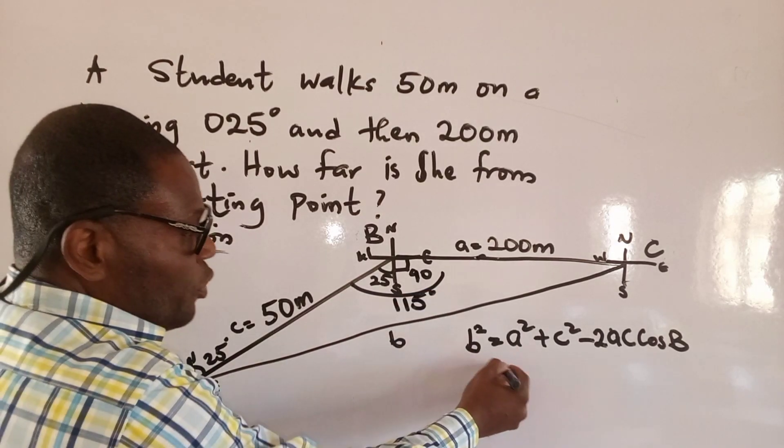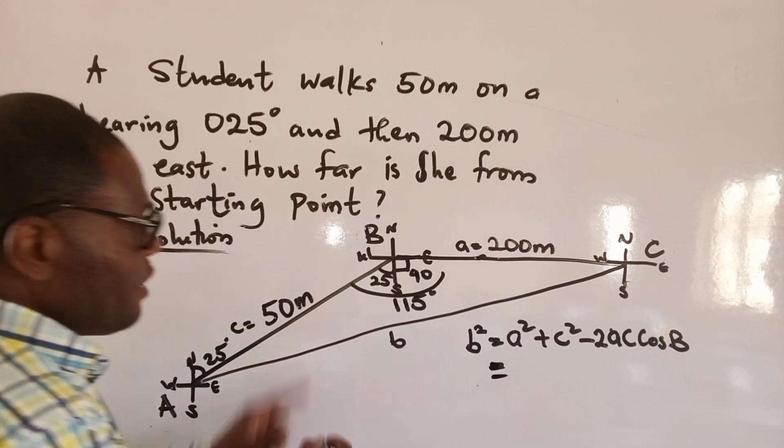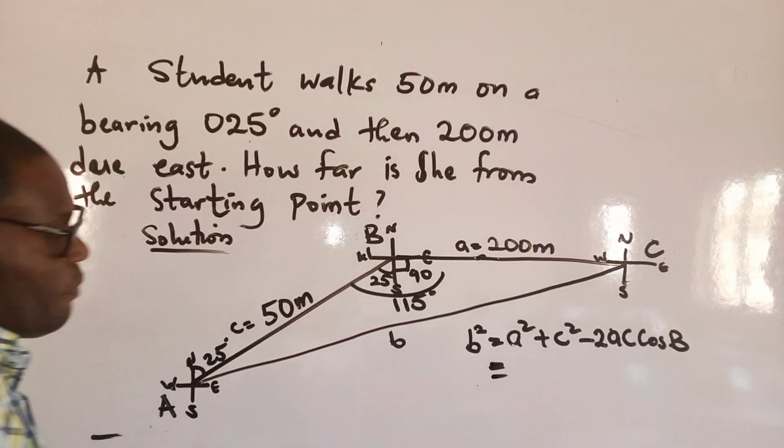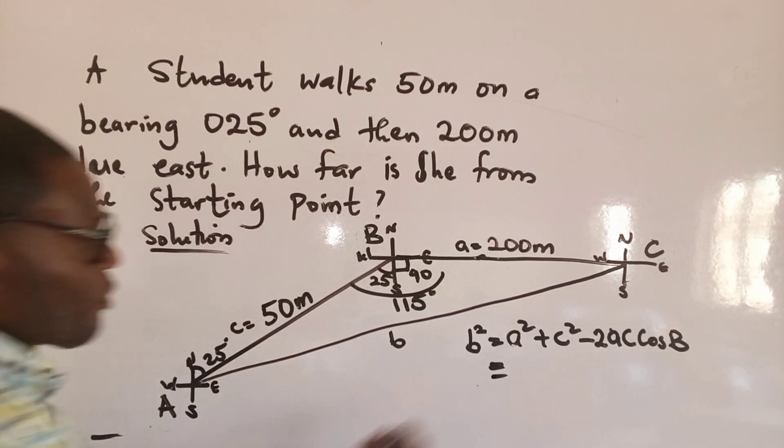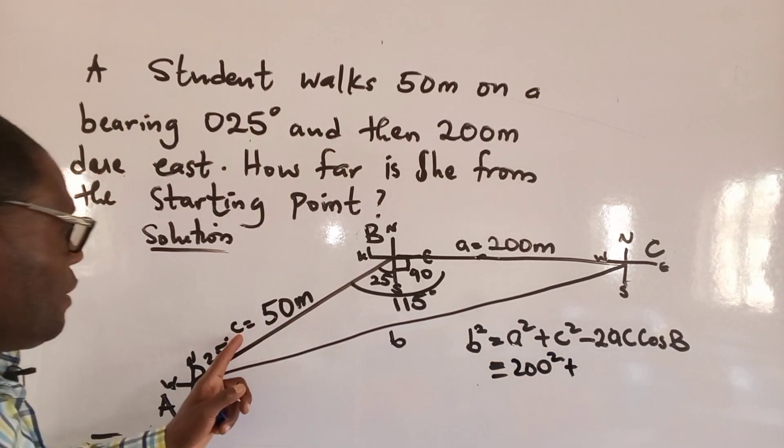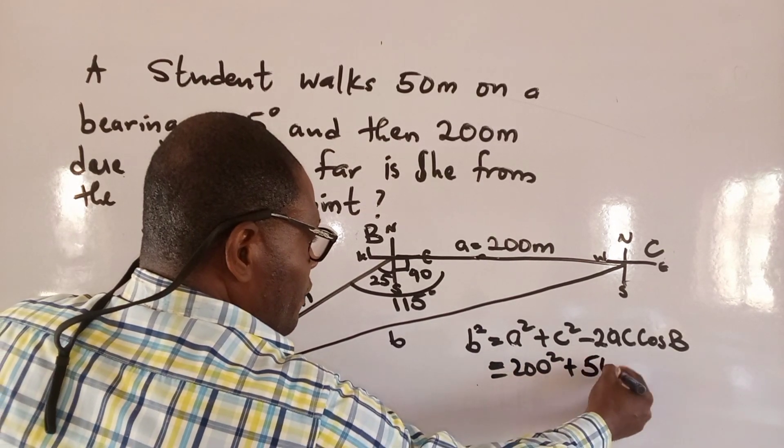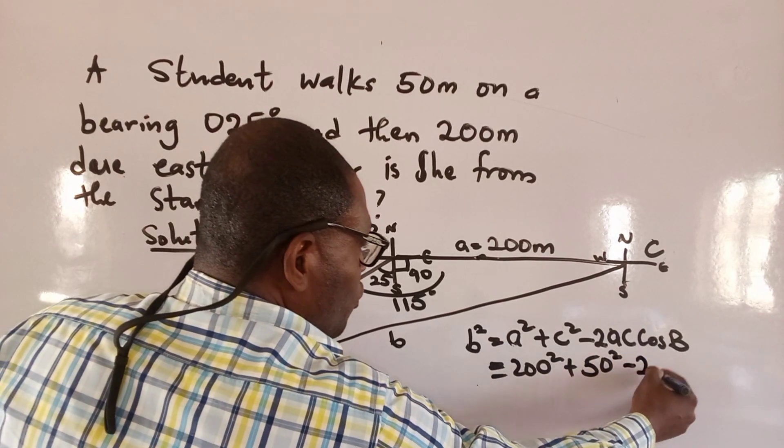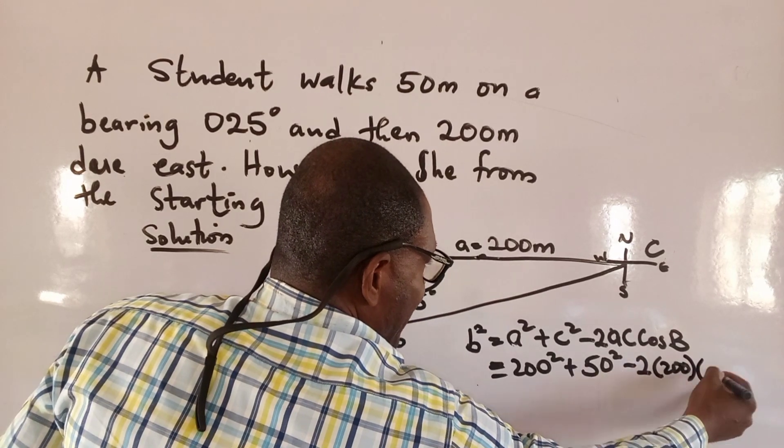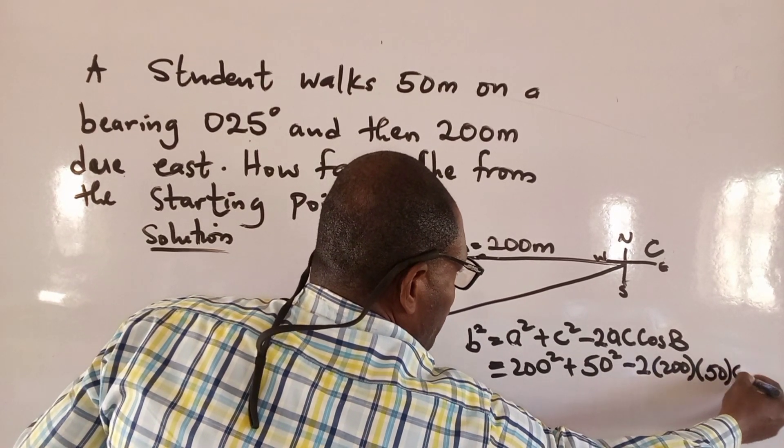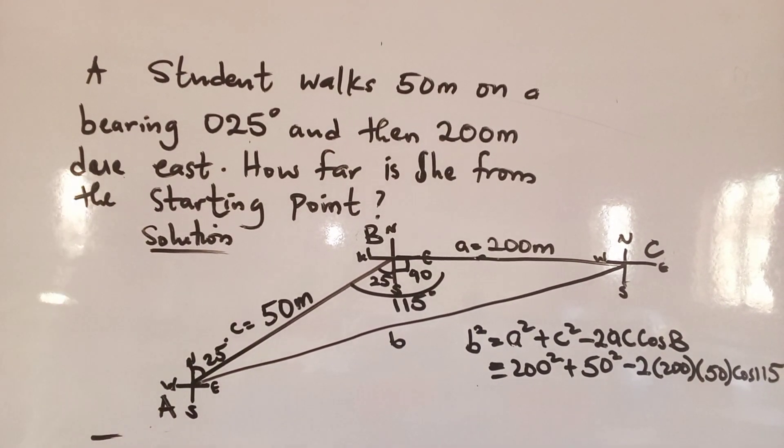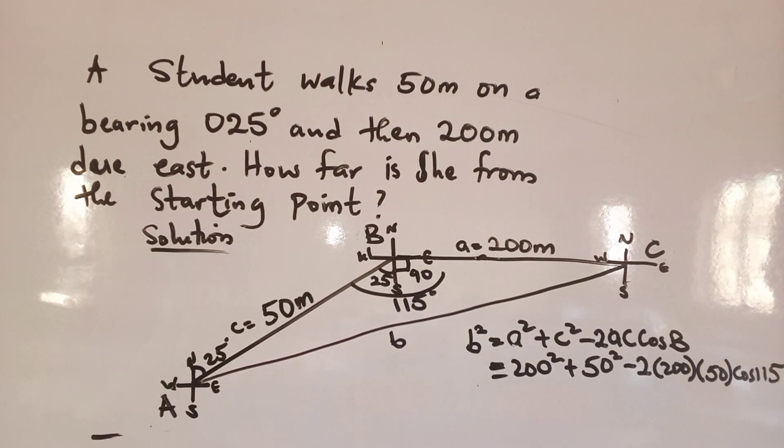So we now substitute the values into the formula. So a² is 200². My c is 50². Minus 2 times a, which is 200, times c, which is 50, times cos 115 degrees.